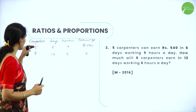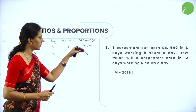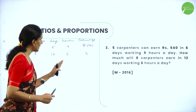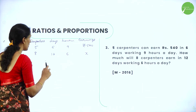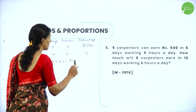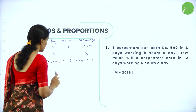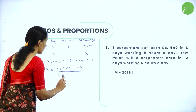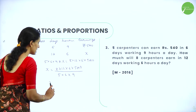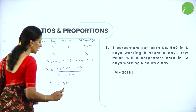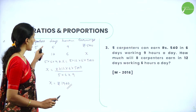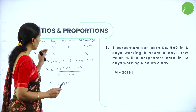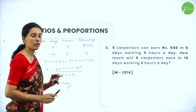We can see the ratios: 5 is to 8, 6 is to 12, 9 is to 6, and 540 is to x. As the number of carpenters and days increase, earnings also increase, so they are in direct proportion to earnings. Therefore we write: 5 into 6 into 9 into x equals 8 into 12 into 6 into 540. So x equals 8 into 12 into 6 into 540 divided by 5 into 6 into 9, giving x equals rupees 1920. This is the earnings when 8 carpenters work 12 days for 6 hours.